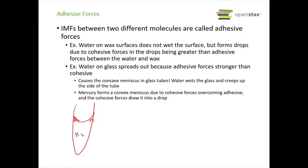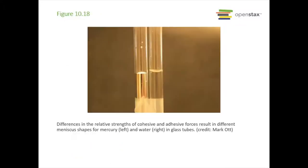Mercury makes a convex meniscus. If you've somehow had a test tube of mercury, it would actually look like this. This is due to cohesive forces overcoming the adhesive forces with the water, and so the cohesive forces make it become a droplet type shape. And here's an actual picture of the two.